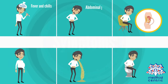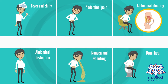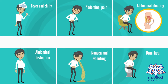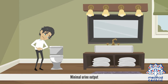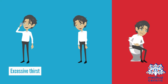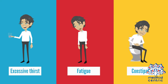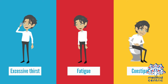Symptoms of peritonitis include fever and chills, abdominal pain or tenderness, abdominal bloating, abdominal distension, nausea and vomiting, diarrhea, minimal urine output, excessive thirst, fatigue, and constipation or inability to pass stool or gas.